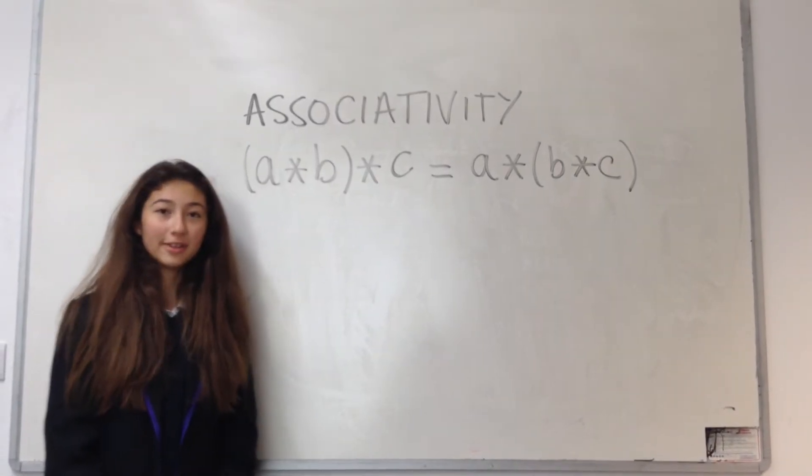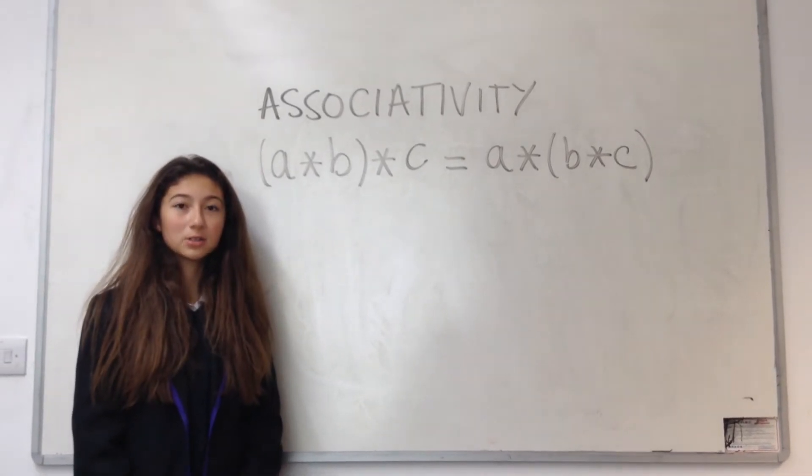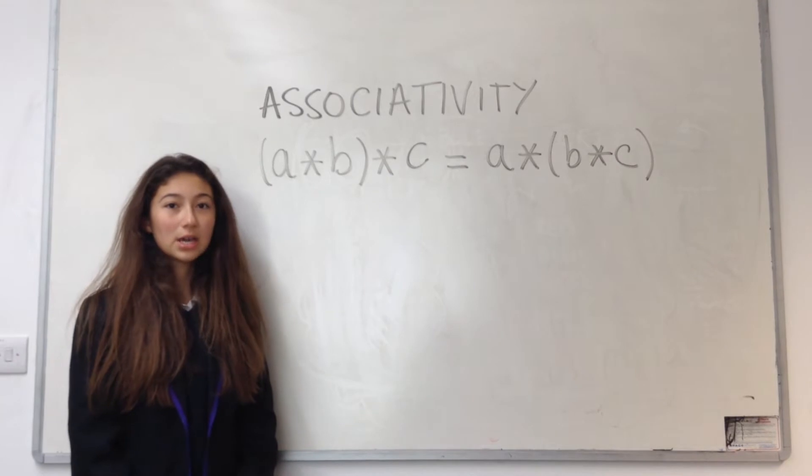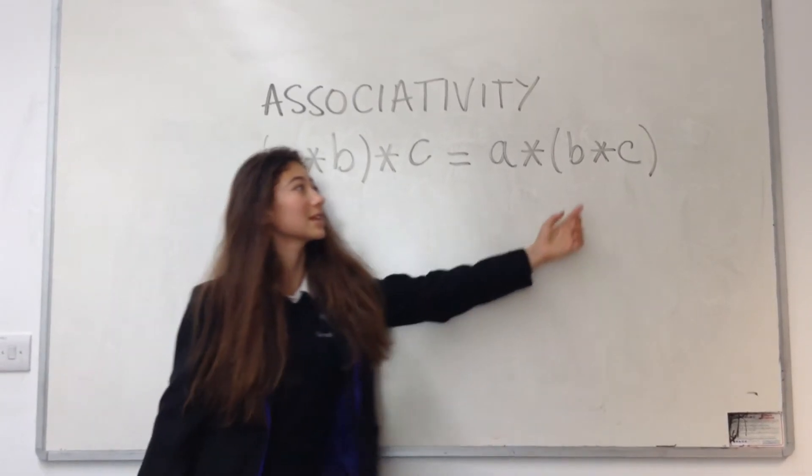First group property, associativity. If you combine three things together, it doesn't matter whether you combine the first two first, then by the third, or if you combine the first one with the result of the second and third one.